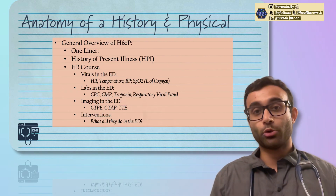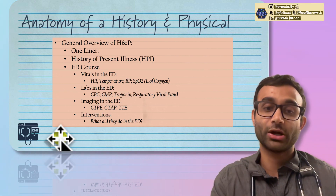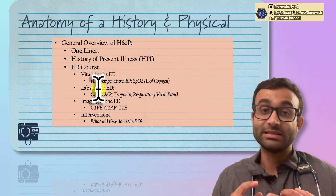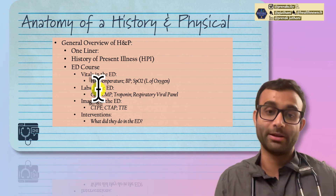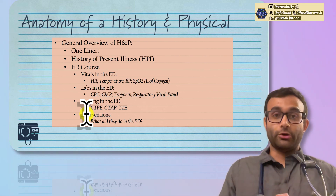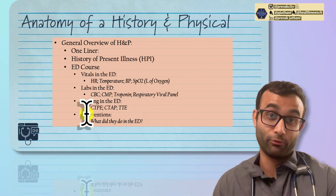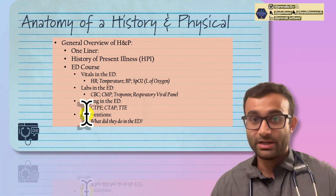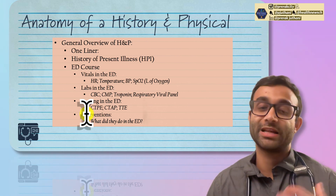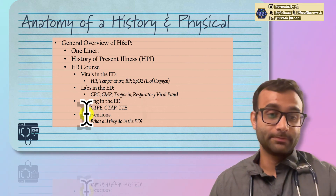Then you have the ED course. When someone comes into a hospital, they often go to the ED first and then get admitted. In the ED, they do several things. They measure the patient's vitals — always document those. They often get labs — document what labs they got. They often get imaging — CT of the abdomen and pelvis, CT chest, chest x-ray, whatever they get, document it. And oftentimes they do interventions: give fluids, give antibiotics, give breathing treatments. Document all of those, because if someone has a remarkably high troponin, you're now worried about ACS; if they have a very low potassium, you're worried about hypokalemia and how it was treated.